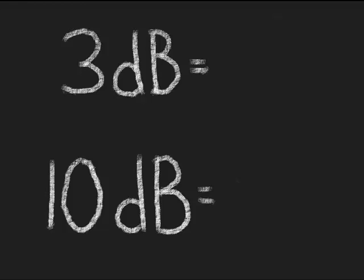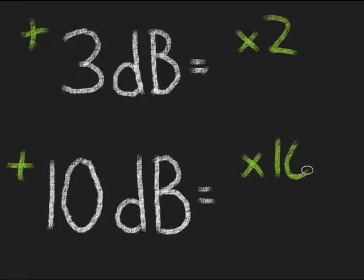The rule of 10s and 3s is quite simple. It just says for every gain of 3 dB, you take your transmit power and you multiply it by 2. It doubles. And for every gain of 10 dB, you multiply your transmit power by 10.